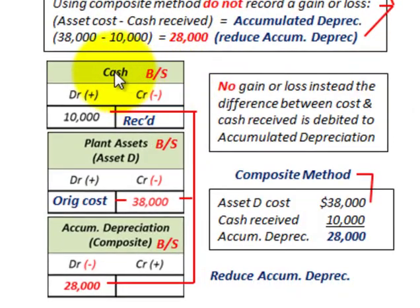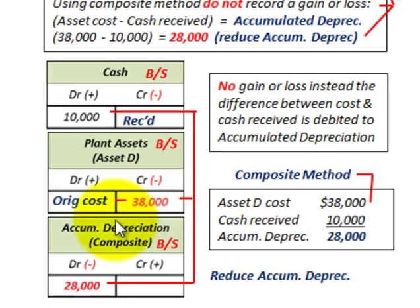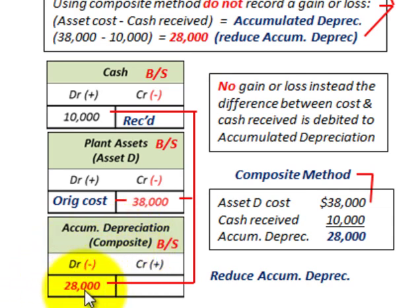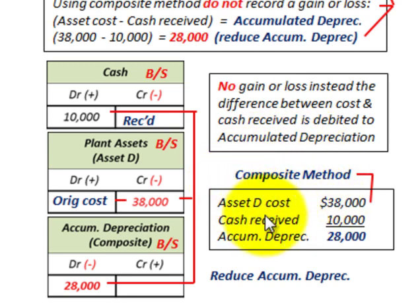To record the transaction where asset D was sold: debit cash for $10,000 received; credit plant assets — asset D — at its original cost of $38,000 to remove it from the balance sheet; and debit accumulated depreciation for $28,000 as the balancing amount. Accumulated depreciation acts as the balancing account between the cash received and the removal of the asset at cost. No gain or loss is recorded; the difference between cost and cash received reduces accumulated depreciation.